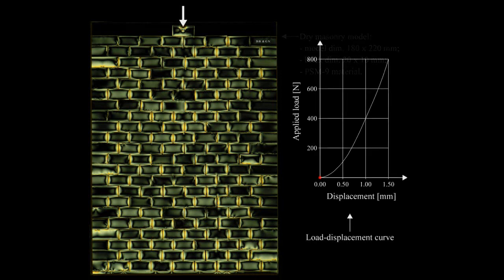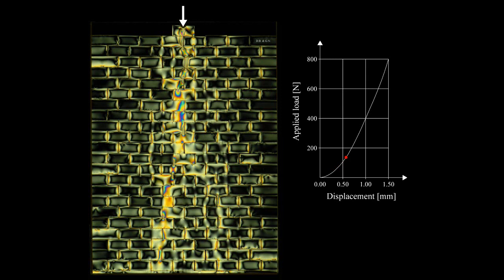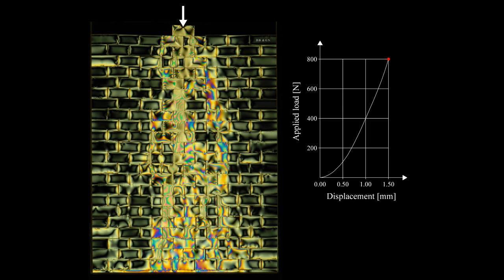Let's consider now the photoelastic experiment. We work on an 18x22 cm model loaded by an increasing vertical force. The graph showing the vertical force versus the displacement is shown on the right; a red spot denotes the force level. We see that the stress percolates through the masonry in a very localized stream. This stream is nearly vertical and broadens when the load is increased. Eventually we see one primary stress path plus a secondary one.